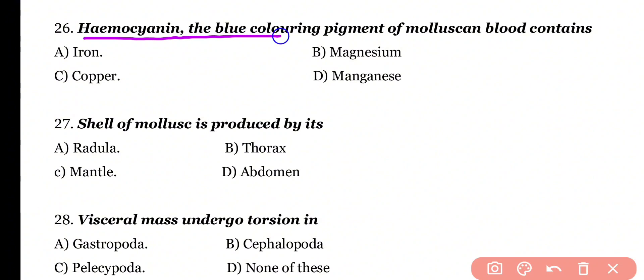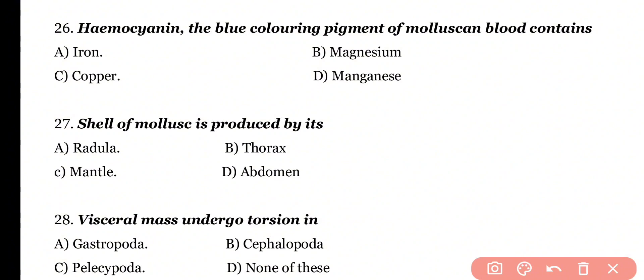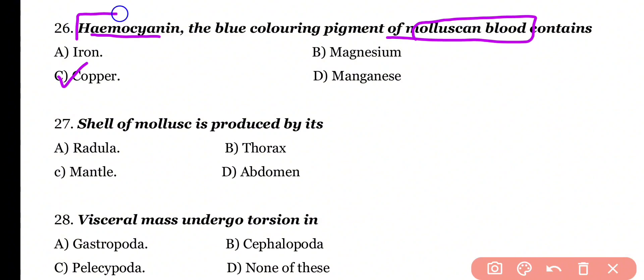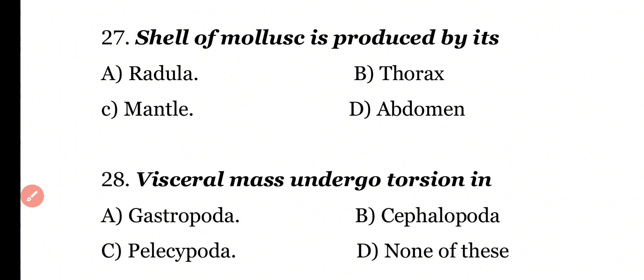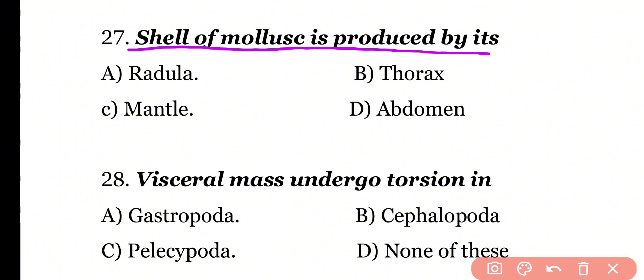Question number 26: Hemocyanin, the blue coloring pigment of molluscan blood, contains which element? Options: Iron, Magnesium, Copper, Manganese. Correct answer is option C. Hemocyanin is a respiratory pigment present in molluscan blood, and it is blue in color because it contains the metal copper.